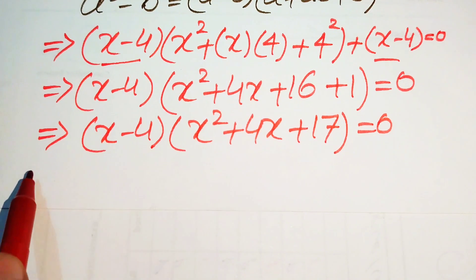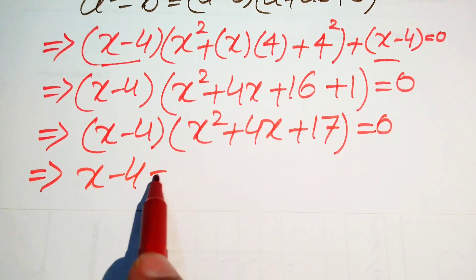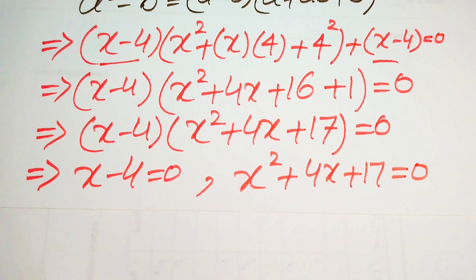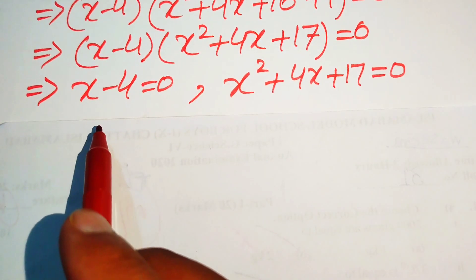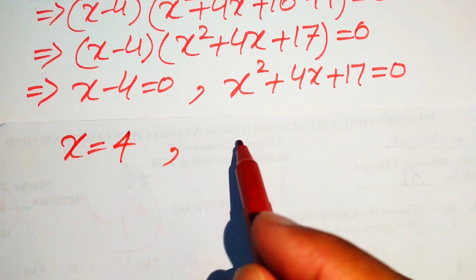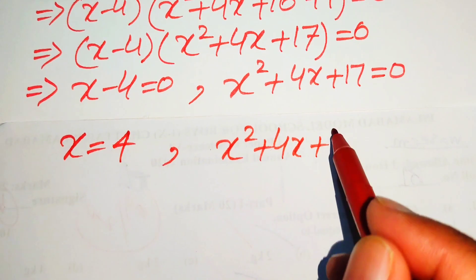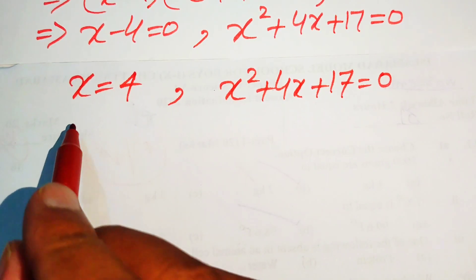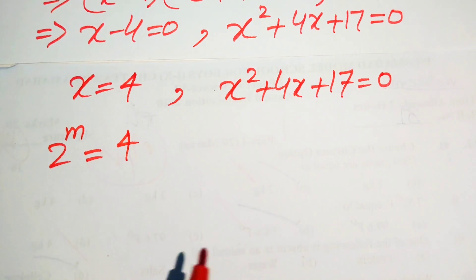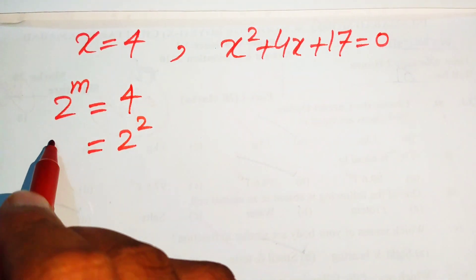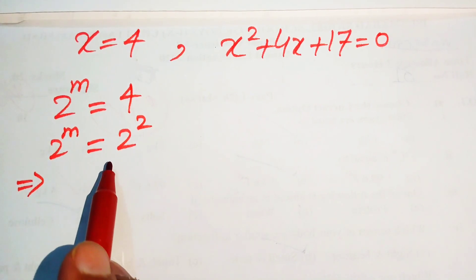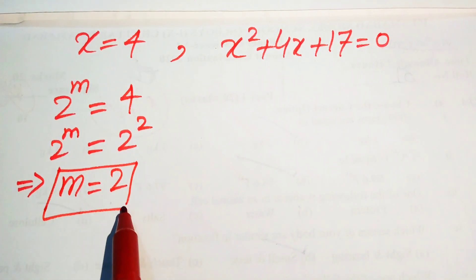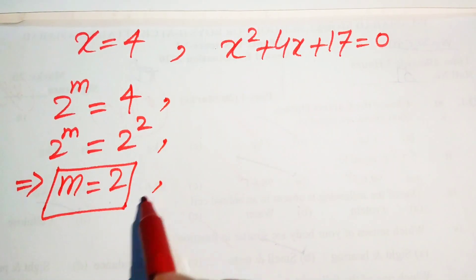We split this into two cases. Case 1: x minus 4 equals 0, giving x equals 4. Case 2: x squared plus 4x plus 17 equals 0. Back-substituting into x equals 2 to the power of m, we get 2 to the power of m equals 4, which is 2 squared. Comparing bases, m equals 2. This is the first real root.